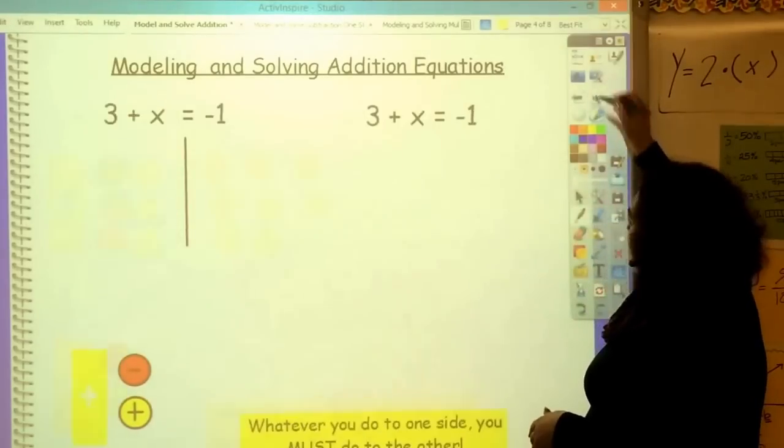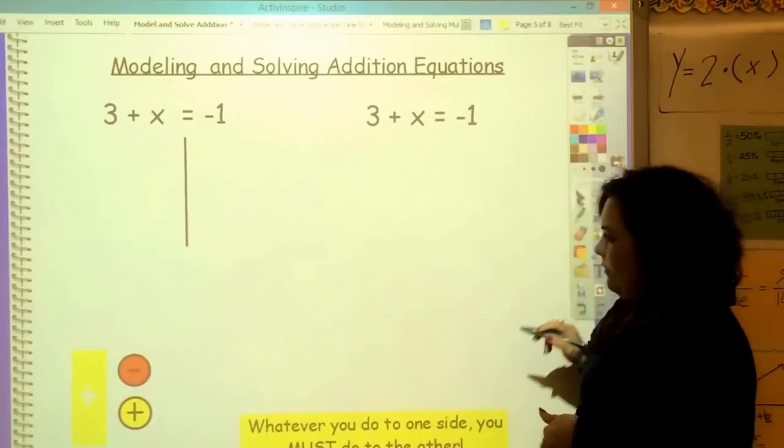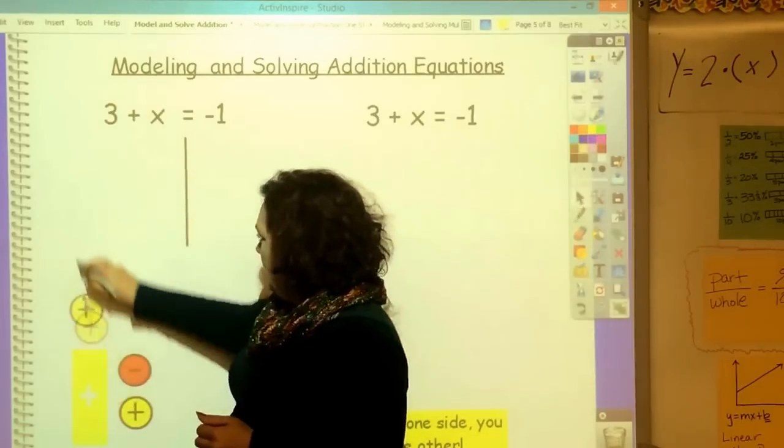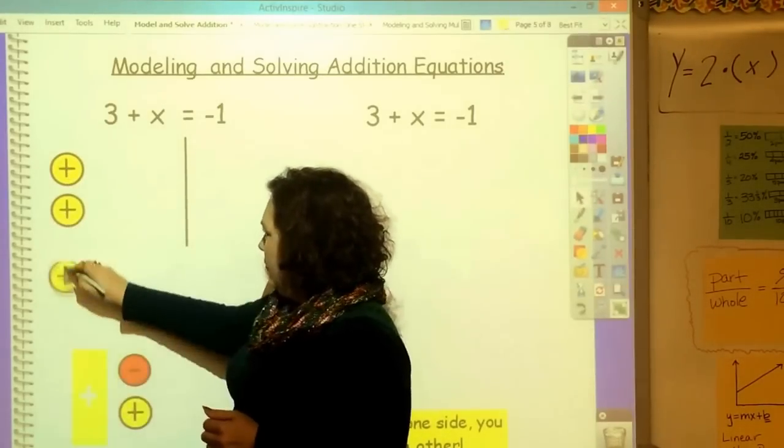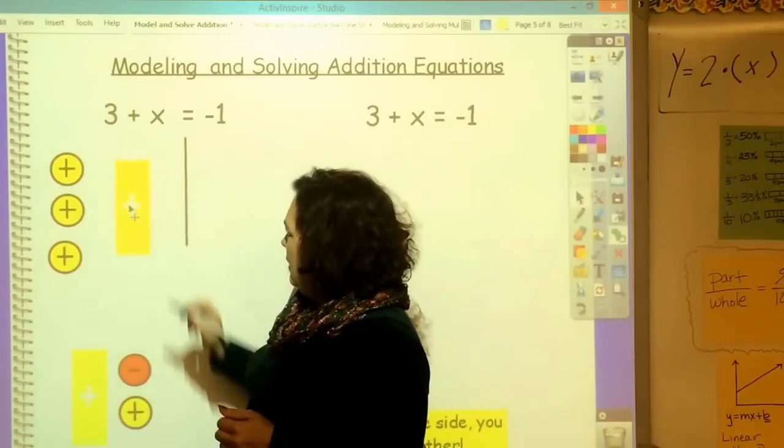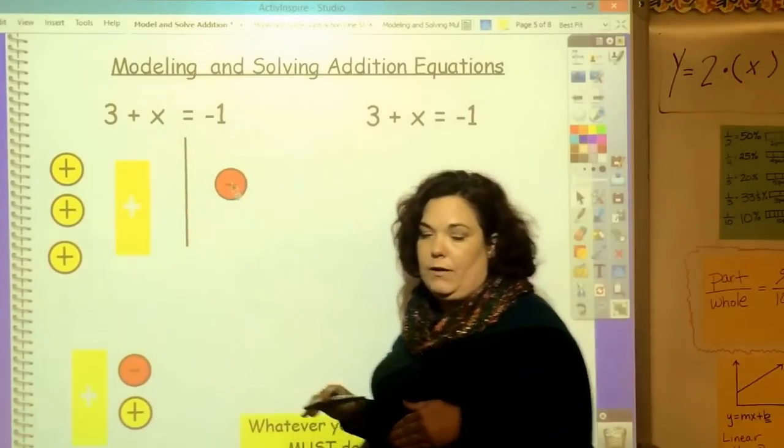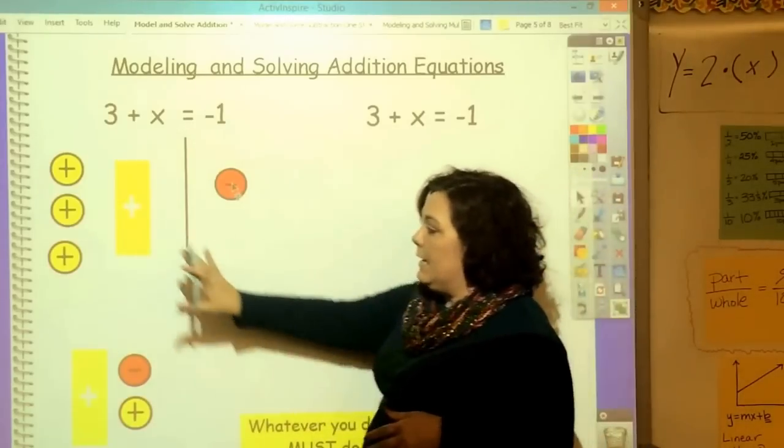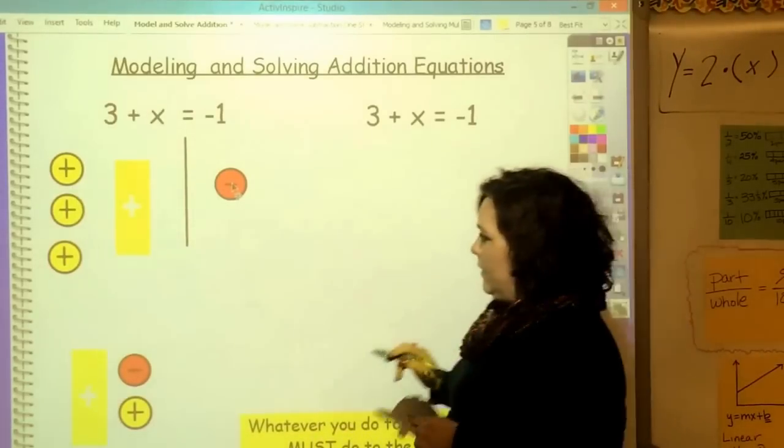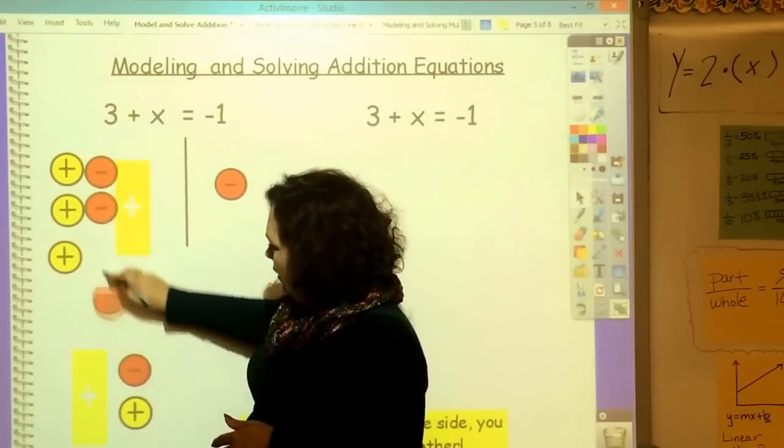Let's do the last one, and then we're going to look at it to do it without the models. This is 3. 1, 2, 3. They're positive. There's no sign here. And plus x equals negative 1. So, just negative 1 here. I want to get x by itself, but I've got these three hanging on. So, I've got to get rid of them. I'm going to get rid of them by adding negative 3 on this side.